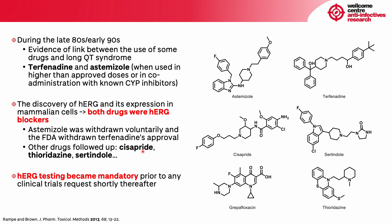During the late 80s and early 90s, there was a growing body of evidence linking the use of some drugs to long QT syndrome, especially for terfenadine and astemizole when used in higher than approved doses or co-administered with CYP inhibitors. The discovery of the human HERG gene and its expression in mammalian cells allowed us to test if some drugs are HERG inhibitors, and both drugs were found to be HERG blockers. As a consequence, astemizole was withdrawn voluntarily and the FDA removed terfenadine's approval.